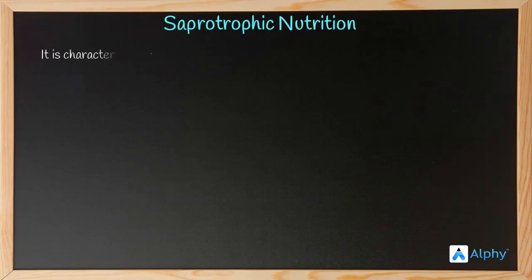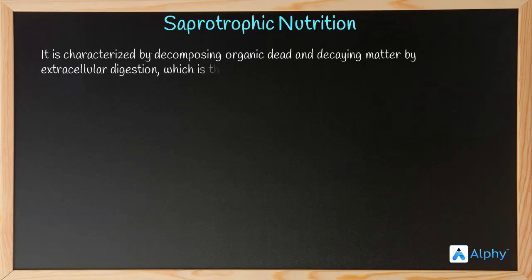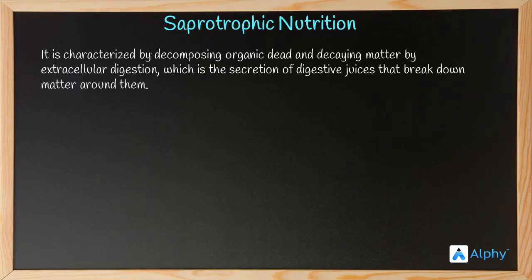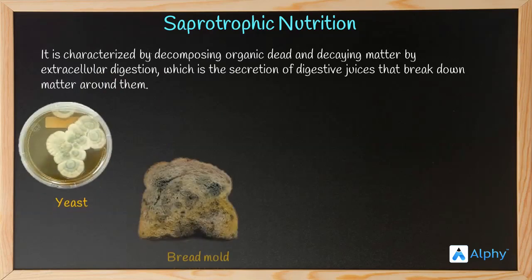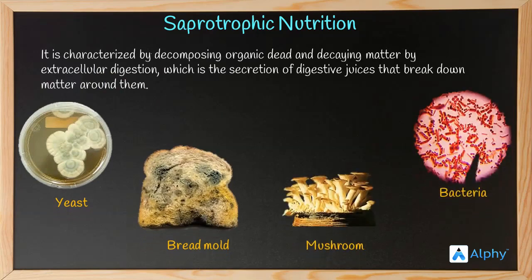Next is saprotrophic or saprophytic mode of nutrition. It is characterized by decomposing organic dead and decaying material through extracellular digestion — the secretion of digestive juices that break down matter around the organism. The digestion occurs outside the body; the organism secretes digestive juices outside, which break down the food material, followed by absorption.